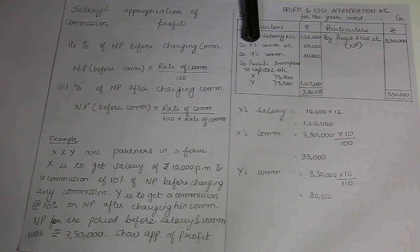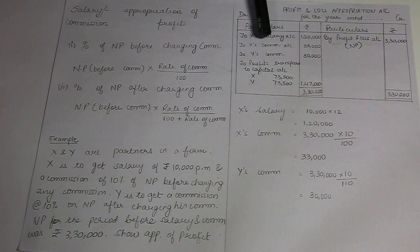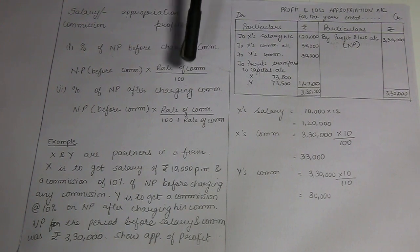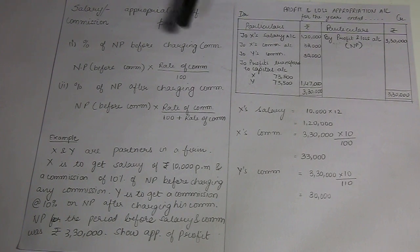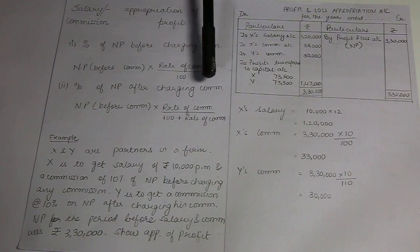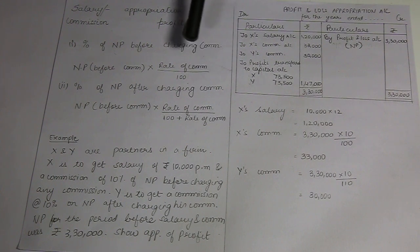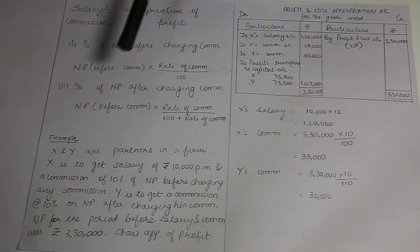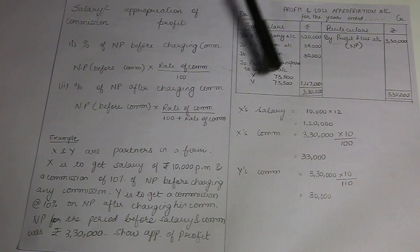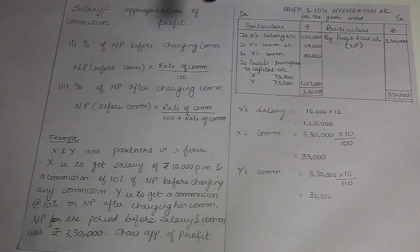But if commission is given as a percentage of net profit, then there are two cases. Case 1: percentage of net profit before charging such commission. Case 2: percentage of net profit after charging such commission. Students have a lot of confusion here, because they don't get the actual meaning behind this. With the help of an example, we will try to understand this completely.